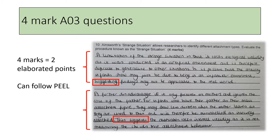Looking at the first paragraph, we've got the idea of ecological validity being conducted in an artificial environment — but that could apply to any lab study. What's important in AO3 is that you're linking to the question. The next part goes on to talk about how the anxiety infants show may just be due to being in an unfamiliar environment, linking evaluation to the question, and ending with 'this suggests that.' For the second paragraph, you can also see 'this suggests that' highlighted, with the starter 'a further advantage is,' an elaborated point, and a link back — 'this shows that.' Every evaluation paragraph should follow this similar structure.